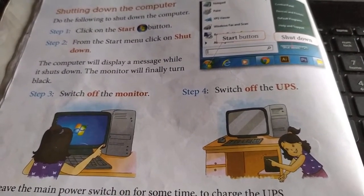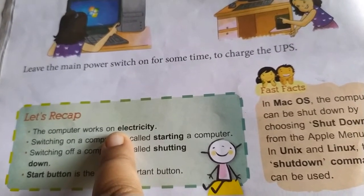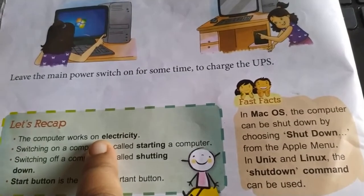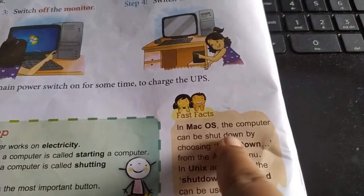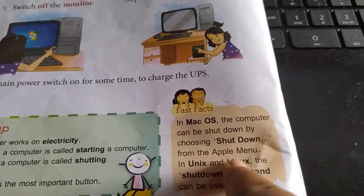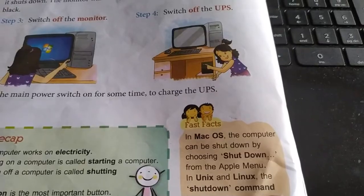Here we finish chapter 4. Today's homework is to write the 'Let's Recap' in your computer CW copy and send it to me at dphahelphist at redgmail.com for correction. One fact sheet: in macOS, the computer can be shut down by choosing 'Shut Down' from the Apple menu. In Unix and Linux, the shut down command can be used. Now read the chapter thoroughly, finish your work, and bye-bye.